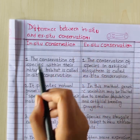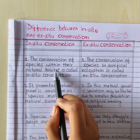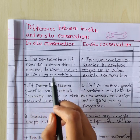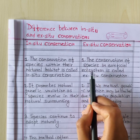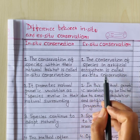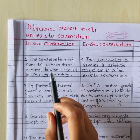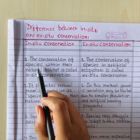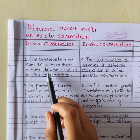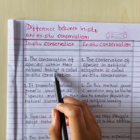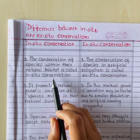In-situ conservation, first point: the conservation of species within their natural habitat is called in-situ conservation. Ex-situ conservation: the conservation of species in an artificial ecosystem is called ex-situ conservation. In-situ conservation refers to the method of conserving plant and animal species within their natural habitat.